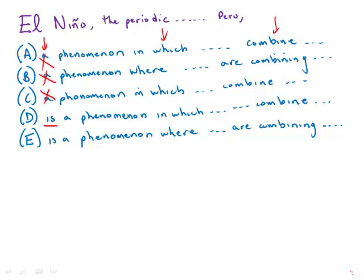Whereas we put the is in there, El Niño is a phenomena. Well, that by itself is a core sentence with a noun and a verb. That works. So we need the is there. That's split number one.